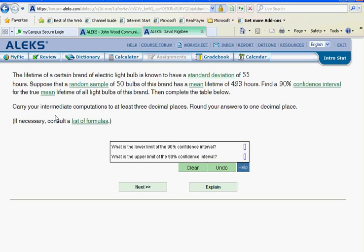The lifetime of a certain brand of electric light bulb is known to have a standard deviation of 55 hours. Now whenever you read this, we have to be a little bit cautious. Some problems will have a standard deviation of the population, other times the standard deviation is of a sample. You have to be careful. Now in this case, it is the standard deviation for the population and that is given to us.